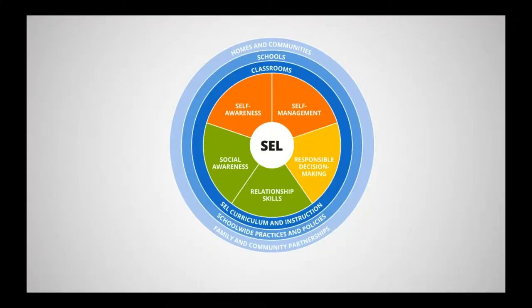CASEL has a great model with these competencies. First, self-awareness — being able to be aware of your own feelings, emotions, and behaviors, and to name them. Then self-management — being able to regulate your emotions. Then social awareness — perceptions of others, their point of view, how they feel. Relationship skills — building and maintaining relationships. And finally, responsible decision-making: do we do things that keep us safe, that are healthy, and that fit social norms? This model is used by many SEL programs in schools.